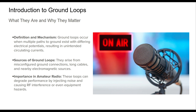Ground loops represent a critical interference source in amateur radio. They form when different grounding points within a station have a slight voltage difference, causing currents to circulate along unintended paths. These currents can be subtle, but their effects, especially in high-frequency setups, are often severe. Typical culprits include long cable runs, improper chassis bonding, and shared power sources. Even nearby transformers or AC mains wiring can introduce voltages that lead to loops. Recognizing ground loops as both a performance and safety issue sets the stage for effective troubleshooting and system design improvements.